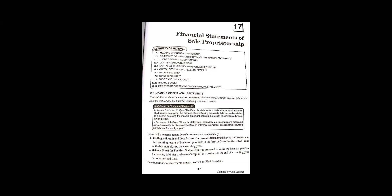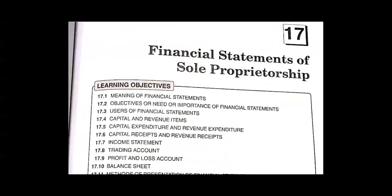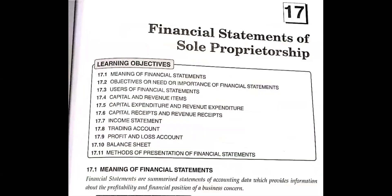Yes class, let's start. Financial Statements of Sole Proprietorship. Financial Statement is divided into two chapters: one is Without Statement and one is With Statement. So this is the Without Statement chapter.